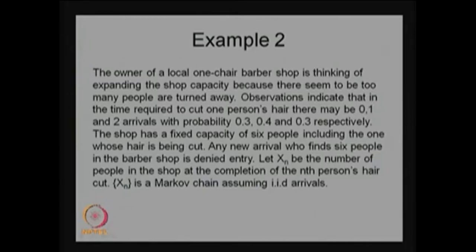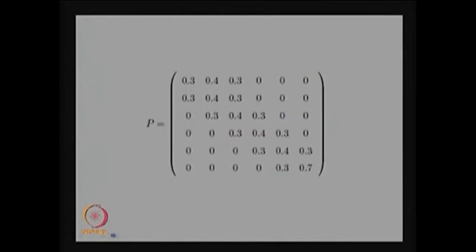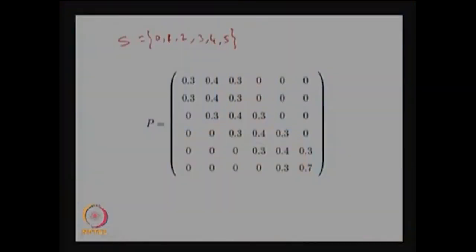In this example our interest is to find the one-step transition probability matrix. The possible states S are 0, 1, 2, 3, 4, and 5, because the capacity of the system is 6, and when the nth person leaves, the maximum number of remaining people is 5, with the possibility of no one being in the system when he leaves. This one-step transition probability matrix is a square matrix with countably finite elements.